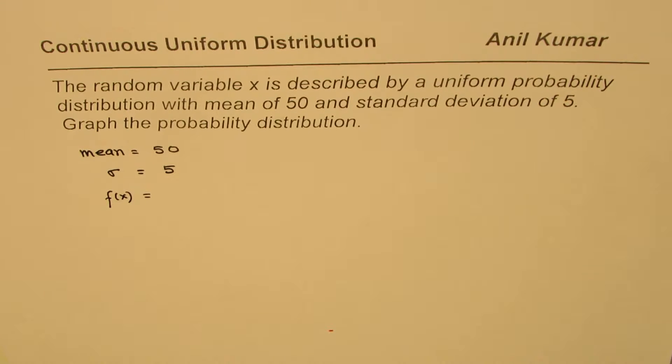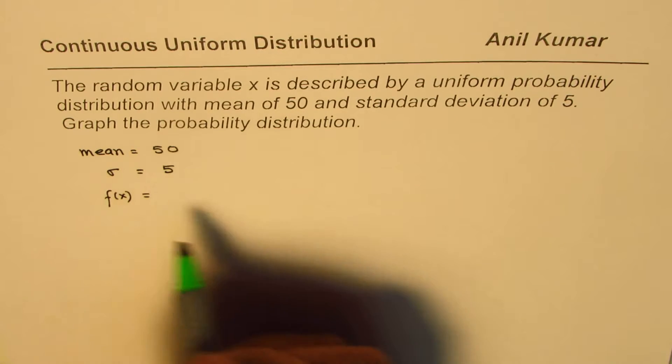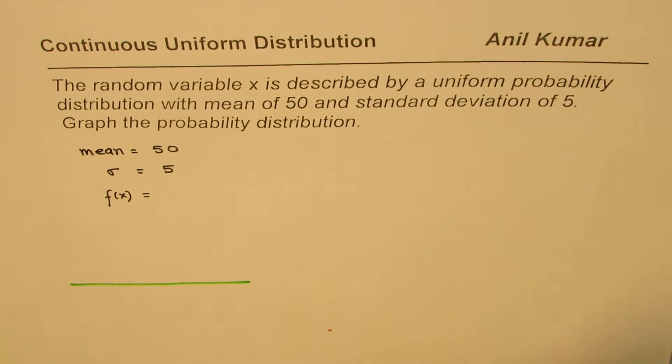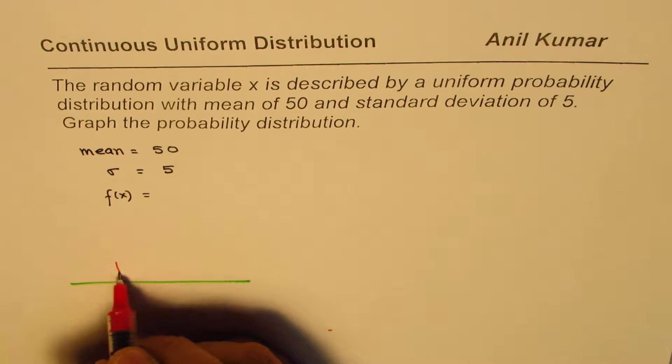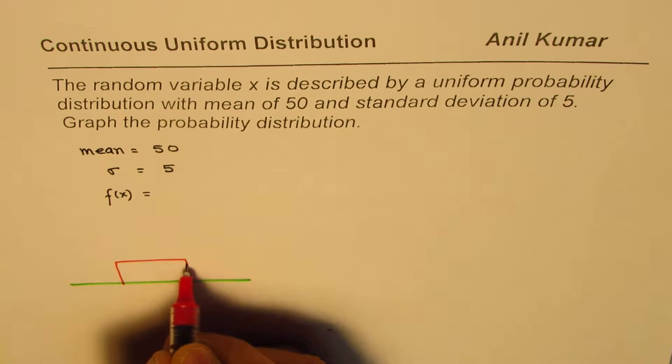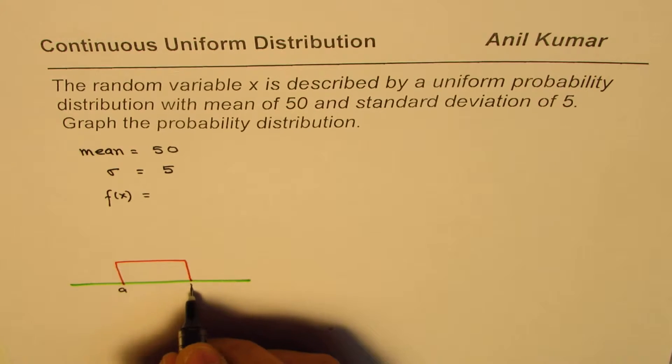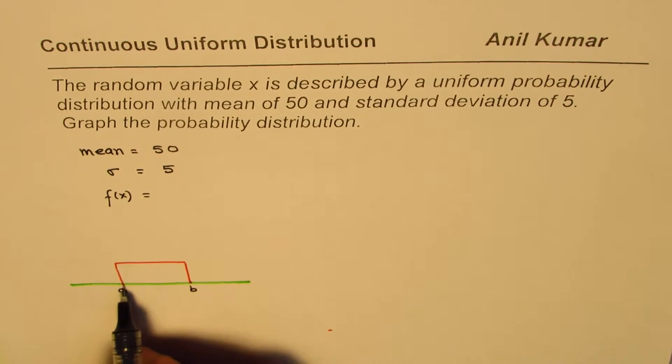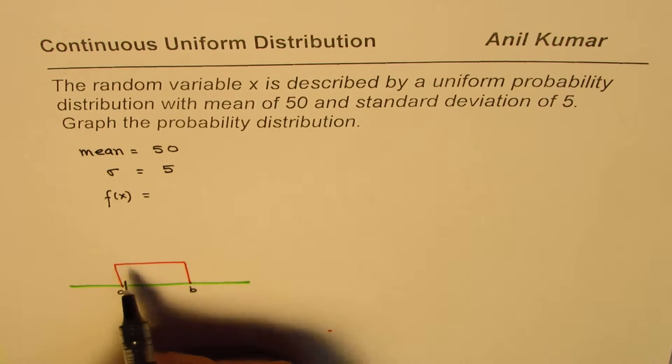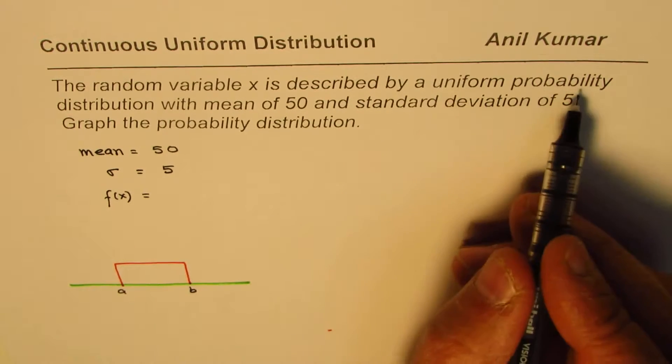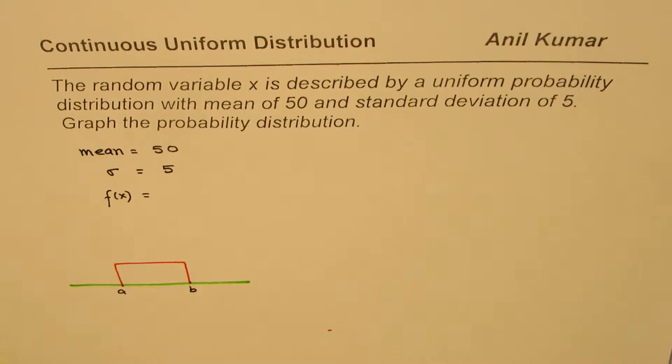So basically, if we have a uniform probability distribution, that too continuous one, then what are we expecting? We are expecting that somewhere in between we have a rectangle. And this rectangle will have a lower bound and an upper bound between any real number. Any real number between A and B could be the value for the random variable for which there is a fixed probability. And that is why we say uniform probability distribution.